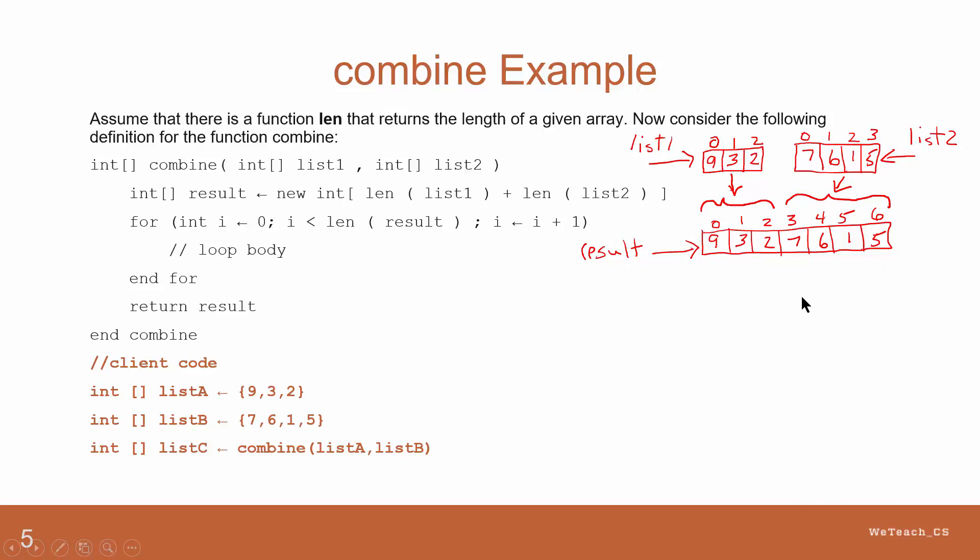The four choices given all start the same way, using a loop that traverses the result array from position 0 to position 6, with an if statement checking to see if the value of i, the loop control variable, is less than the length of list1, which is 3.